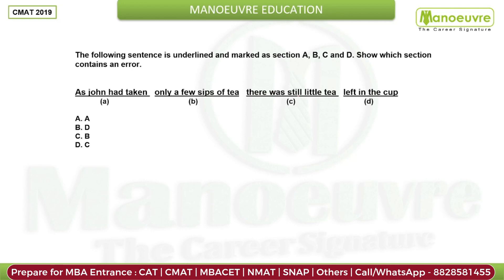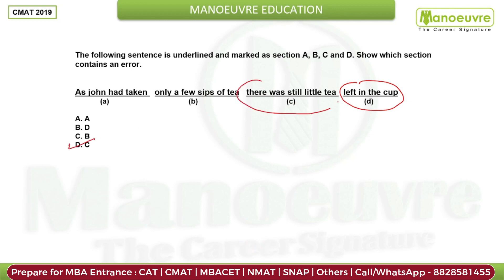Next sentence: 'John had taken only a few sips of tea; there was still a little tea left in the cup.' The answer should be D. The error is 'a still little tea' — the placement of 'still' is incorrect, making this the error in the sentence.